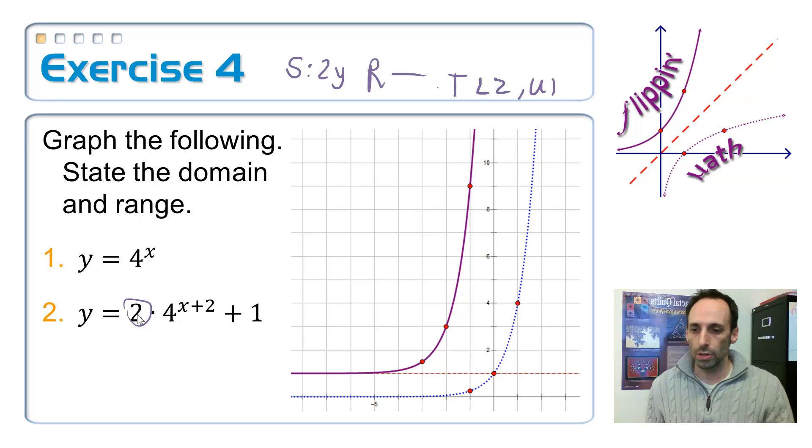Well, for all of these, the domain is always all real numbers. And the range is going to be affected by where that horizontal asymptote is. So this time it starts at 0 and goes up. Does it include, not 0, 1, 1. Does it include 1? No. Because it's an asymptote. So 1, infinity. And that one's done.